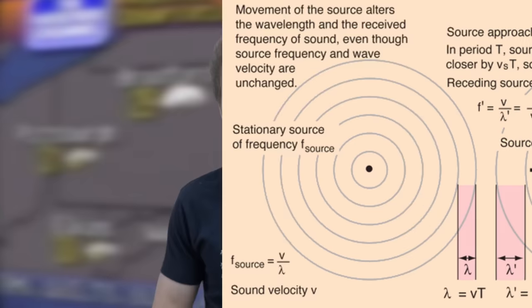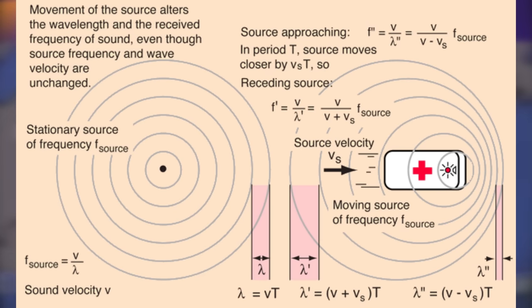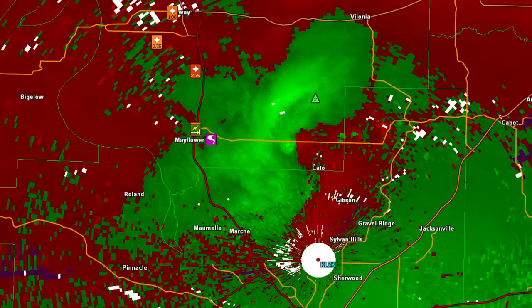By using the difference in frequency of what you hear when the ambulance is moving towards you versus when it's stationary, you can figure out how fast the ambulance itself is moving. The same applies to raindrops. The reflected radar beam is at a higher frequency if the rain is moving towards the radar, and at a lower frequency if the rain is moving away from the radar. This is how we can create a map of the wind field of a storm.